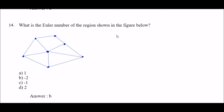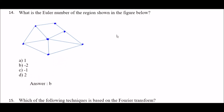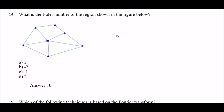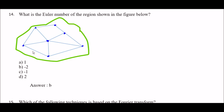Next question: what is the Euler number of the region shown in the figure below? Option A: 1, option B: minus 2, option C: minus 1, option D: 2. The right answer is option B — minus 2.